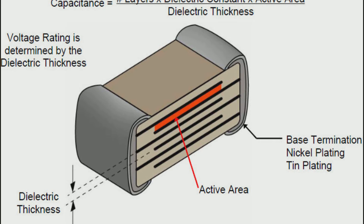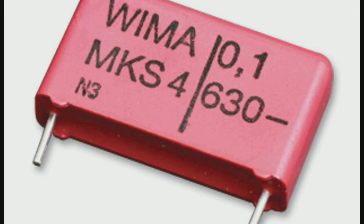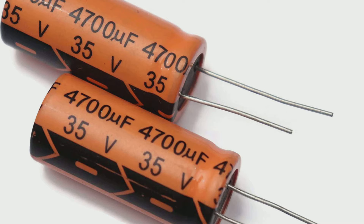Let us understand the basic uses of a capacitor in a circuit. Capacitors are widely used in electrical and electronic circuits. In electronic circuits, small value capacitors are used to couple signals between stages of amplifiers, as components of electric filters and tuned circuits, and as parts of power supply systems to smooth rectified current.